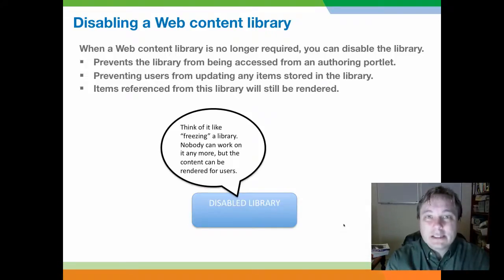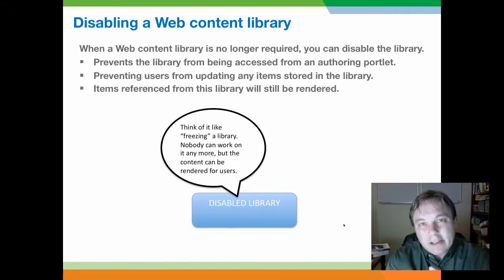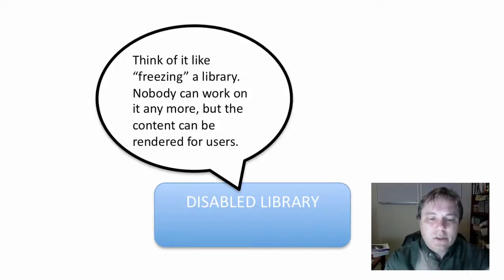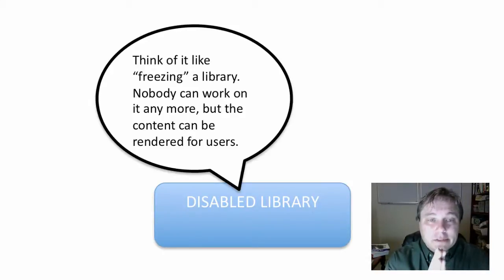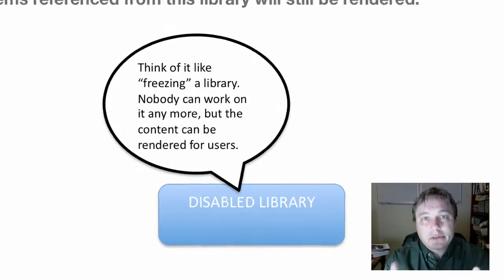You can also disable content and components in a library. Basically, you can freeze the library — you can say this library is now disabled, and nobody can access it through the authoring portlet to edit items, create items, change items, or delete items. However, if any of the items in that library are referenced from content, they're still going to be able to be rendered to the end users of the portal.